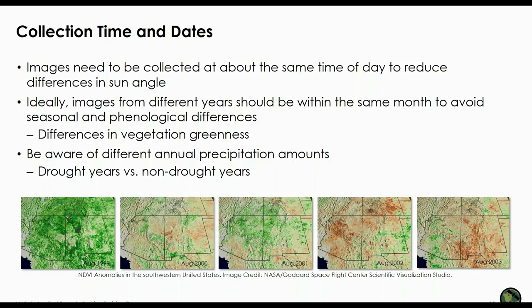Images need to be collected at about the same time of day to reduce differences in sun angles. Ideally, images from different years should be within the same month to avoid seasonal and phenological differences. For example, if you choose an image in the dry season and one in the rainy season, you will be seeing differences in vegetation greenness due to different precipitation amounts, not due to land cover change. Similarly, even if you choose images from the same time of year, you need to be aware of different annual precipitation amounts. If one year experienced extreme drought and one year experienced normal rainfall, you will be seeing differences in vegetation amount due to rainfall differences — and if you're looking at deforestation, you have to be aware of that.